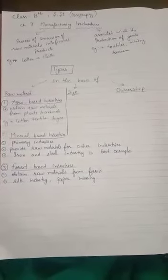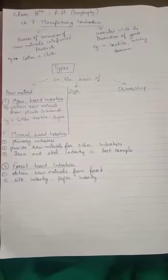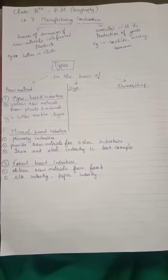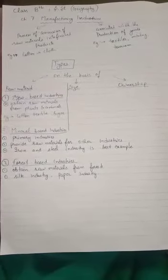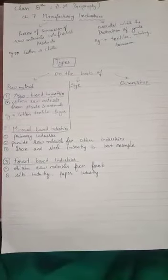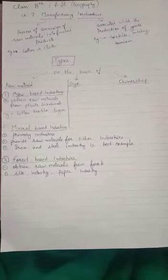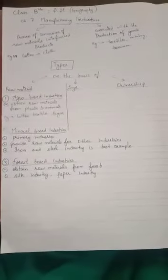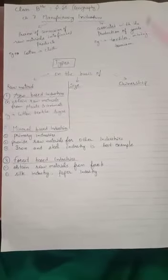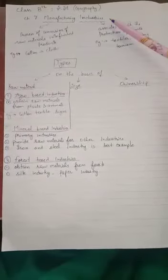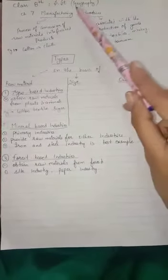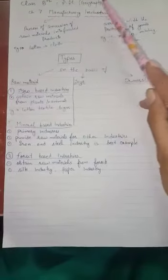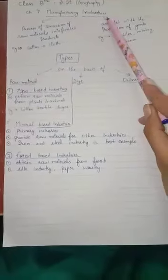Welcome students to your SST class. Today we are going to start with Chapter 7 of Geography: Manufacturing Industries. It comprises two words — manufacturing and industries.